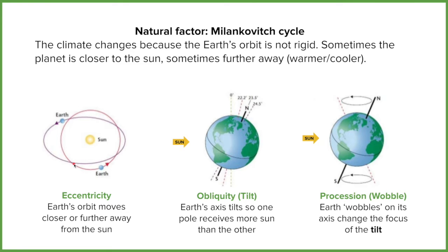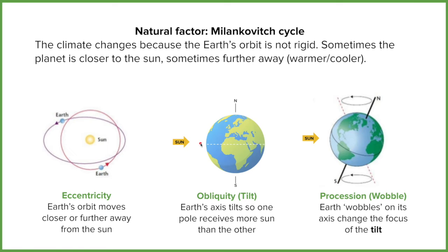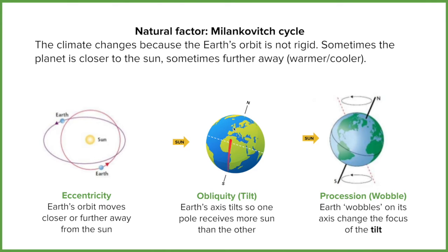The second one is obliquity, also known as the tilt. We know that the earth spins on its axis, but the axis is not always in the same location relative to the sun. So if the axis is at right angles to the sun, the most intense direct sunlight is going to be at the equator. If that axis were to tilt, the sunlight is more on the southern hemisphere, and the northern pole and northern hemisphere are getting less.